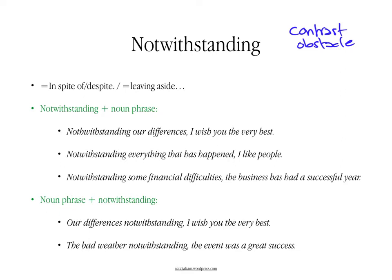For example, you would say 'notwithstanding our differences' — which could be a synonym of 'in spite of our differences' — I wish you the very best. Notwithstanding everything that has happened, in spite of everything that has happened, despite everything that has happened, I like people. Or: notwithstanding some financial difficulties, the business has had a successful year — in spite of some financial difficulties, the business has had a successful year.